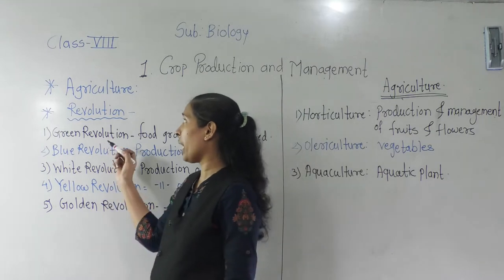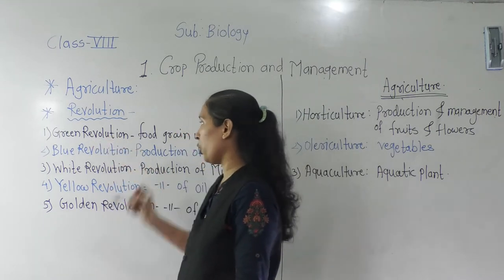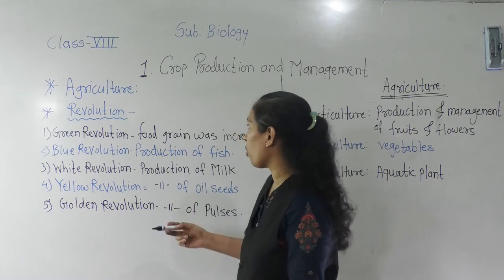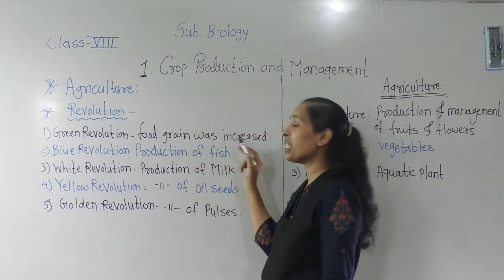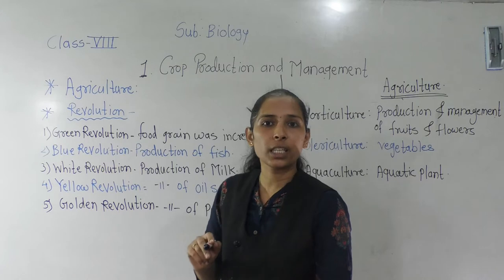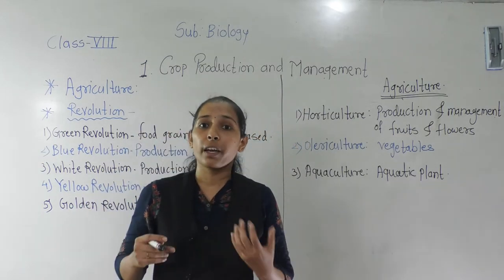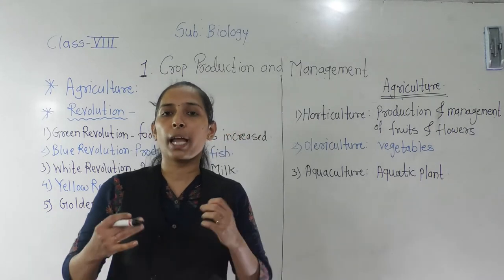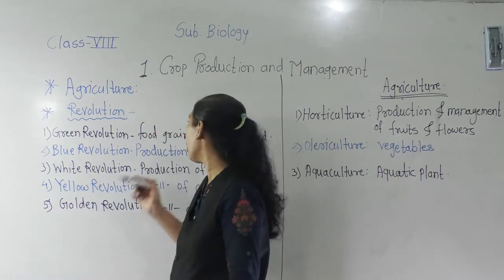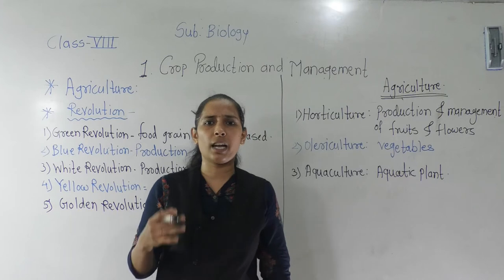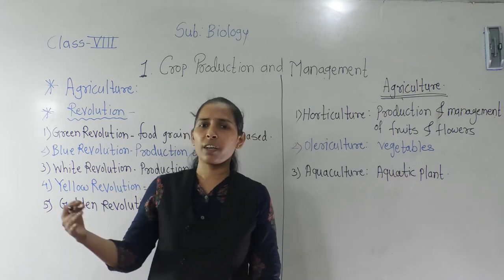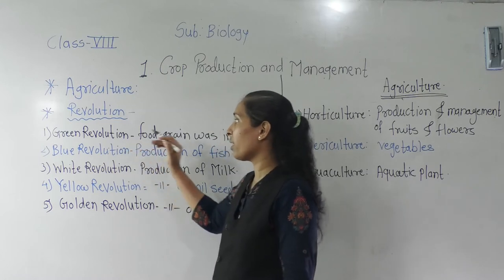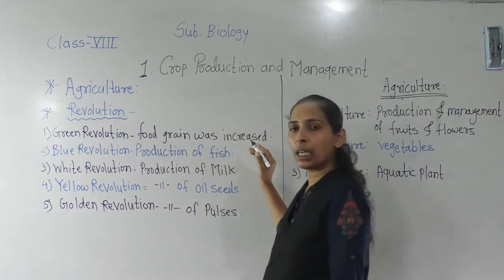The first revolution that happened in the agriculture field is the Green Revolution. What is the Green Revolution? Green Revolution means the production of food grains was increased. In the Green Revolution, we tried to find out different methods, techniques, and instruments which helped to produce a greater amount of food grains — like wheat, jowar, and different types of cereals. All these are crops under food grains.